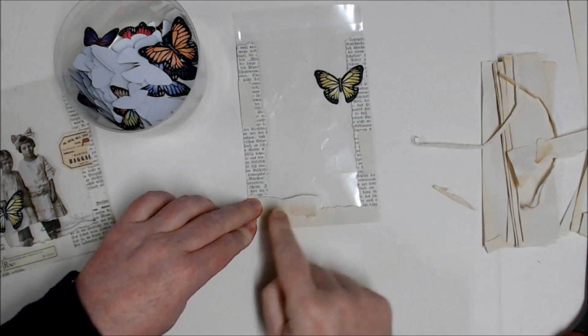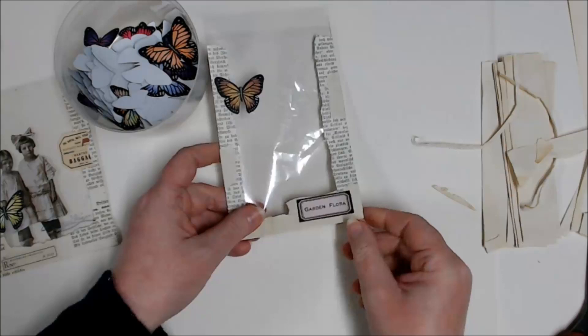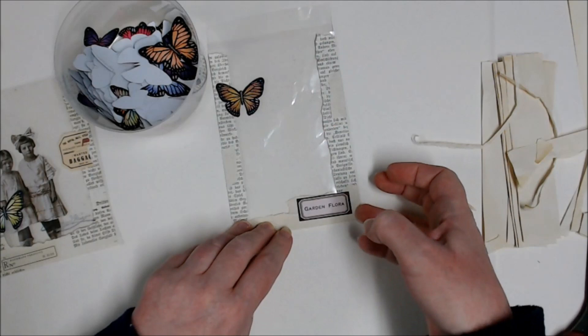Now if you wanted to, you could ink around the edges. Just pop that over there. And then from the front, it's not going to matter if you can see the tea-dyed paper, because it still blends into everything else.